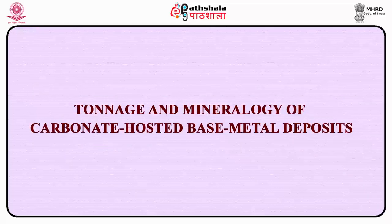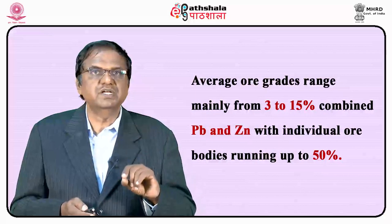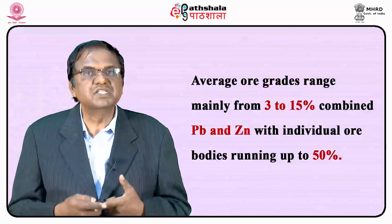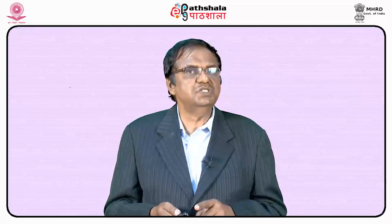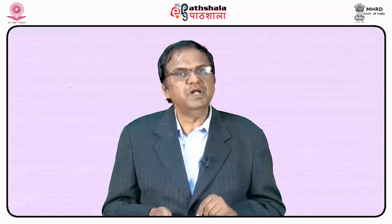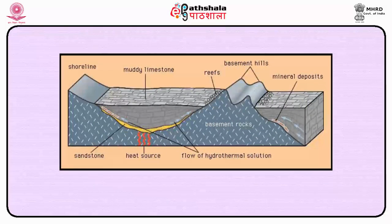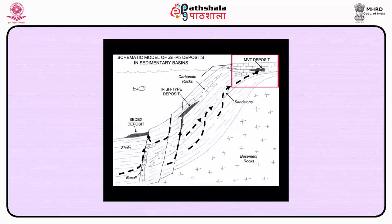Regarding grade, tonnage and mineralogy: average ore grades range mainly from 3 to 15% combined lead and zinc, with individual ore bodies running up to 50%. Tonnage generally ranges from a few tens of thousands up to million tons. Lead and/or zinc are the elements that commonly determine economic viability. In a few mines, silver and copper are important by-products, as are cadmium and germanium. Fluorite and/or barite may be important by-products or the prime products mined. Majority of Mississippi Valley-type deposits are less than 10 million tons, but ore field totals often lie in the range of 50 to 500 million tons — e.g., Pine Point with over 8 separate bodies and Upper Mississippi Valley with nearly 300 deposits.